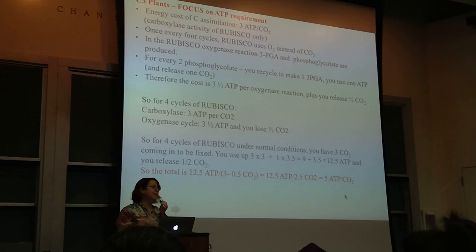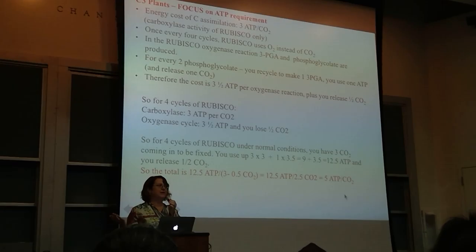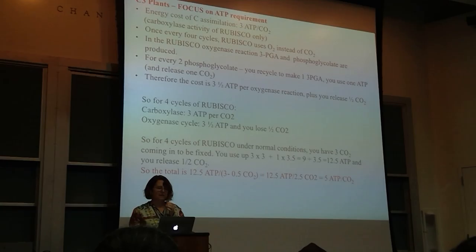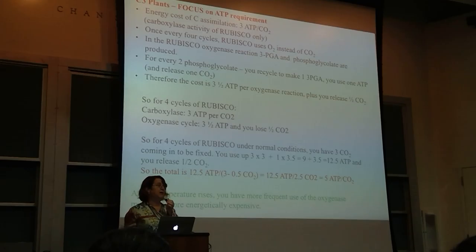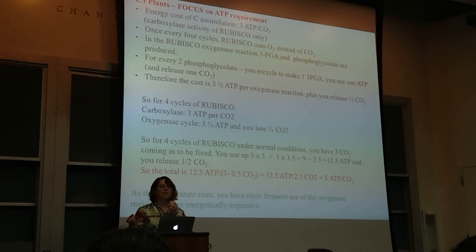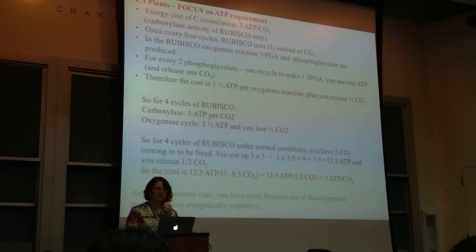Typically in textbooks, they mention photorespiration and that it's a cost, but they never actually calculate it out. As temperature rises, you have more oxygenase cycles—it could even be one-for-one—so your cost in ATP per CO2 keeps getting higher and higher because you're losing CO2 and putting in extra ATP. This is why plants that evolved in tropical areas—the C4 plants—came up with a solution to get around this problem.